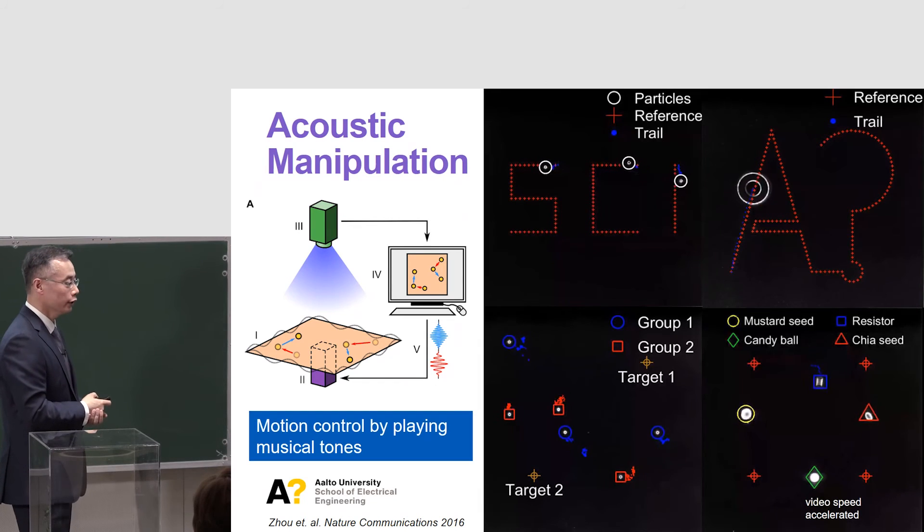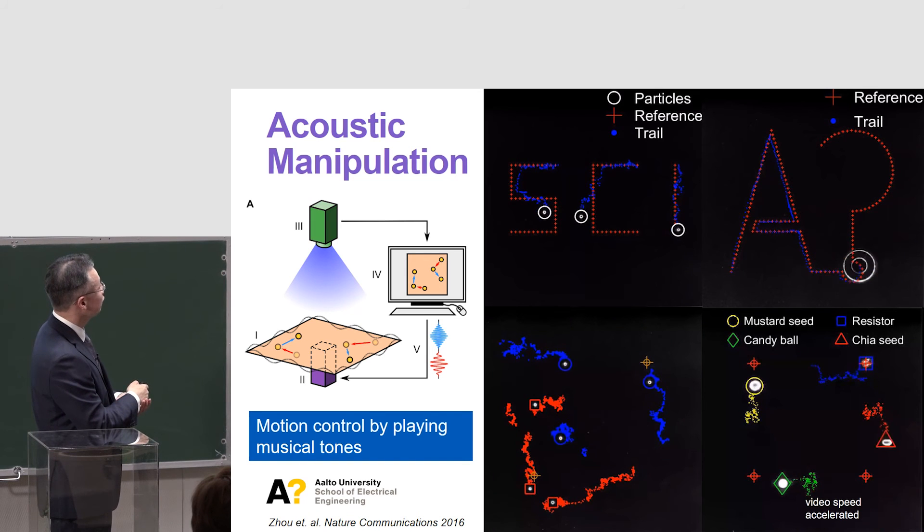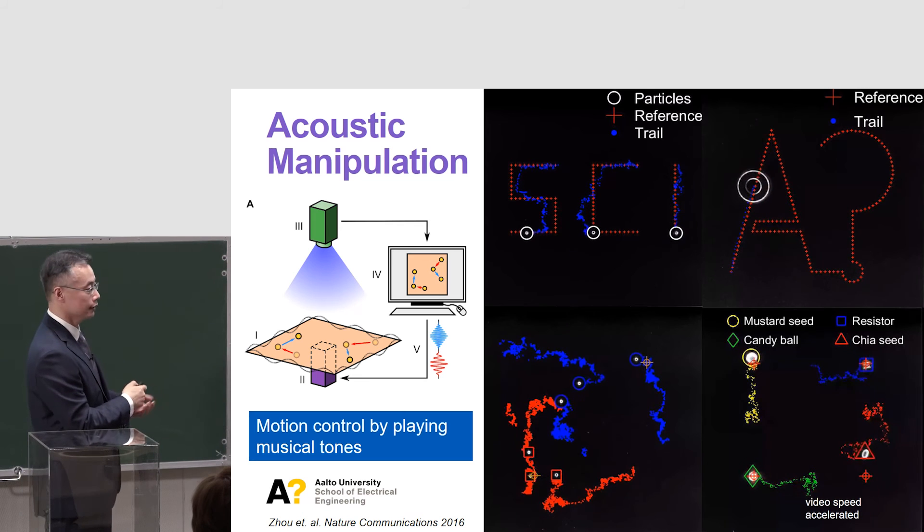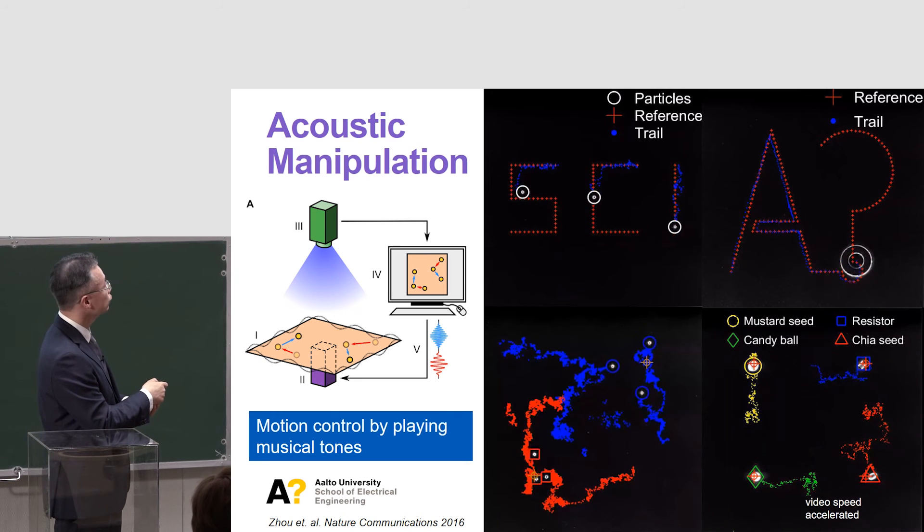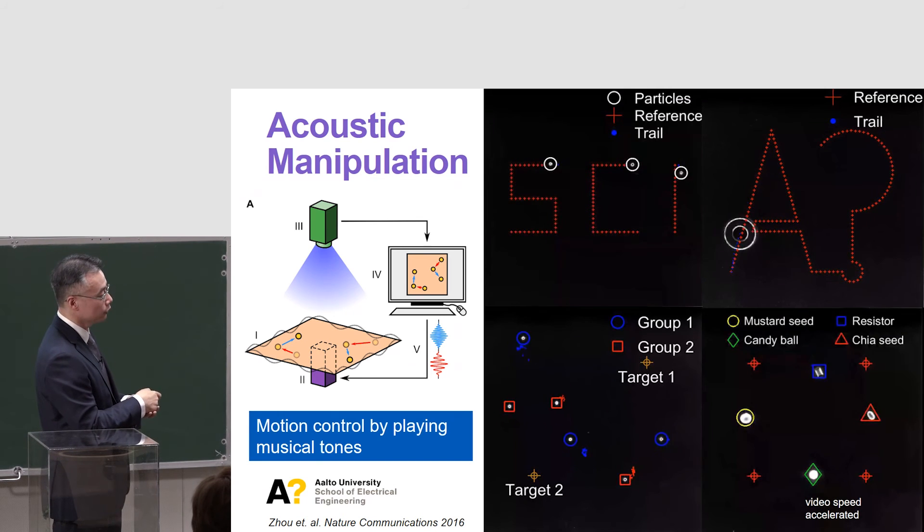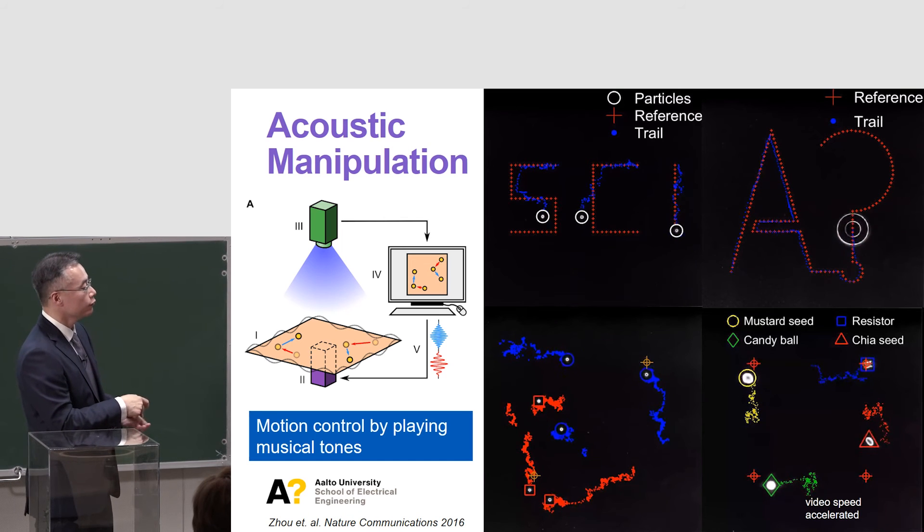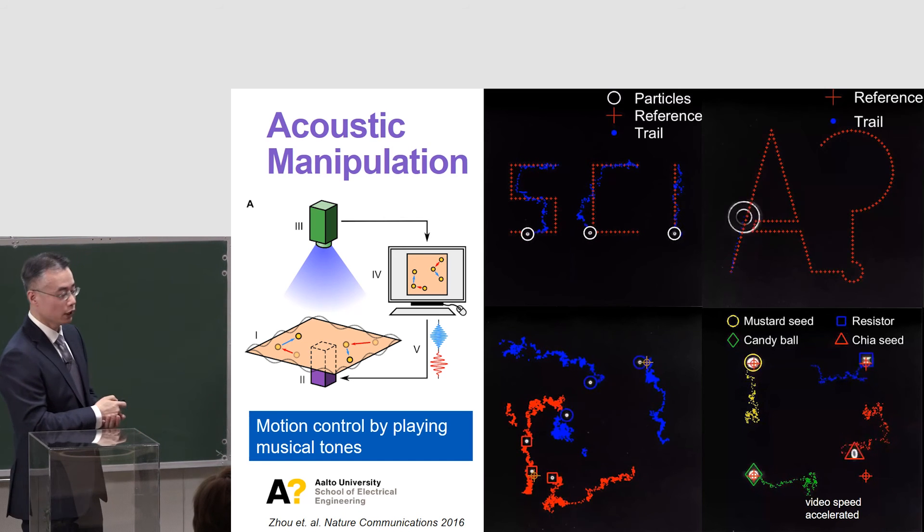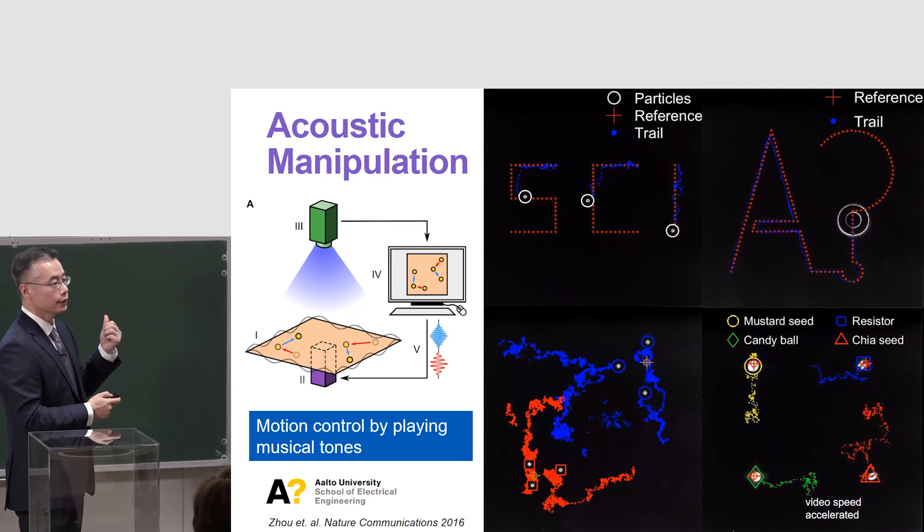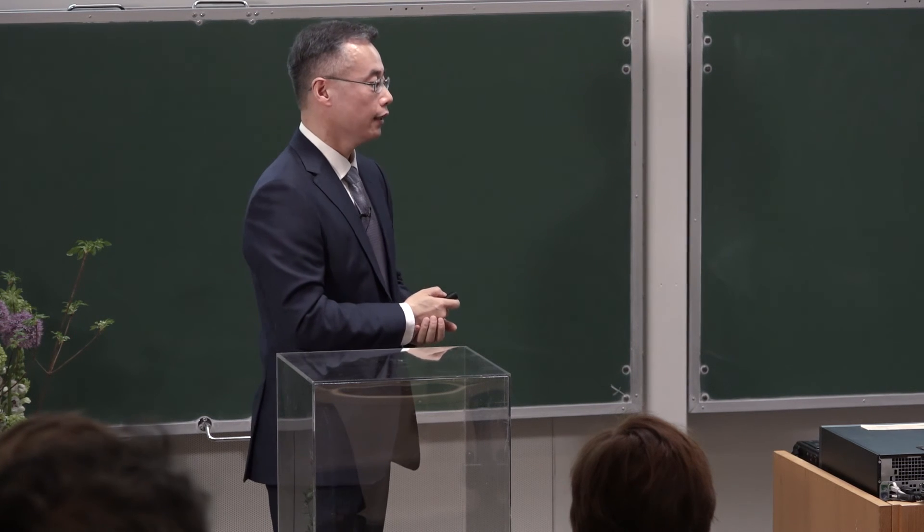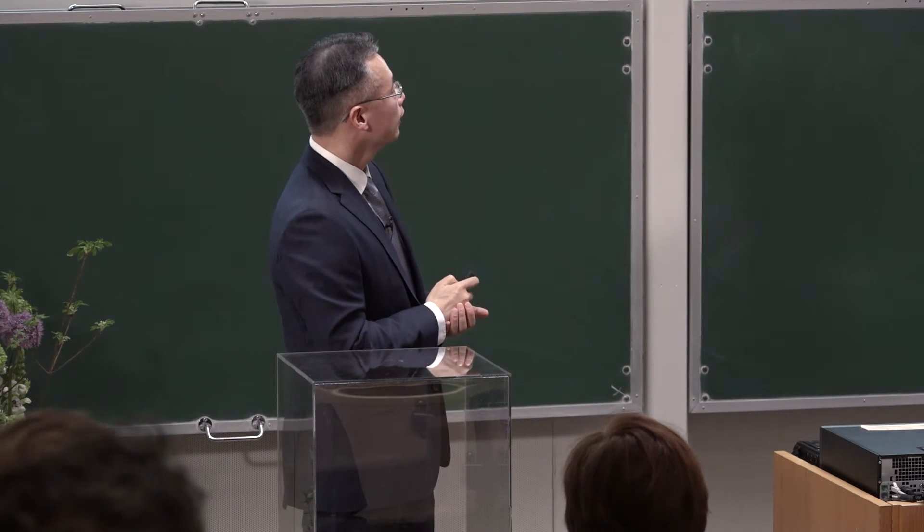This shows some real-world examples. You can see the system is very simple. It's only a plate on a piezo actuator, a single actuator, a single acoustic source. We can control three particles following independently three trajectories, or six particles initially randomly placed and then group them into two groups, or pattern four objects from one formation to another formation. You have to think this has been done with only a single actuator. This is unprecedented, the ratio between how many motions you can control with one device.